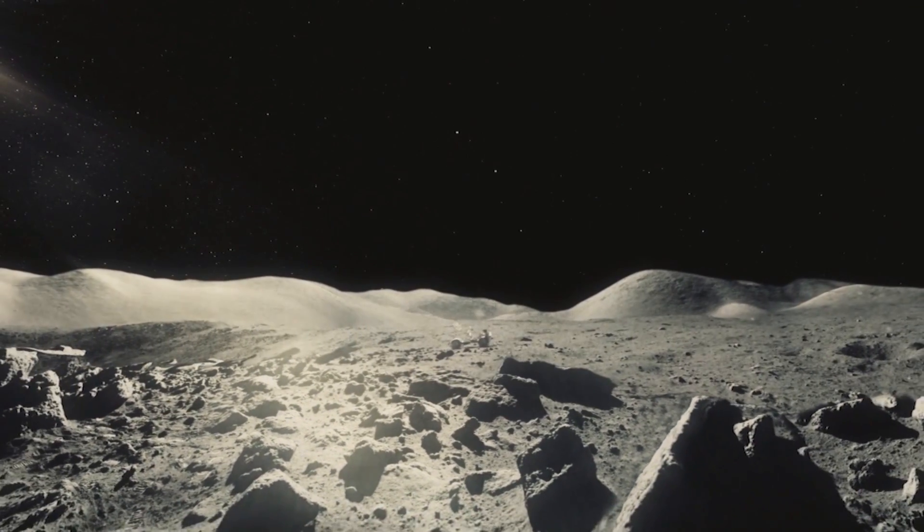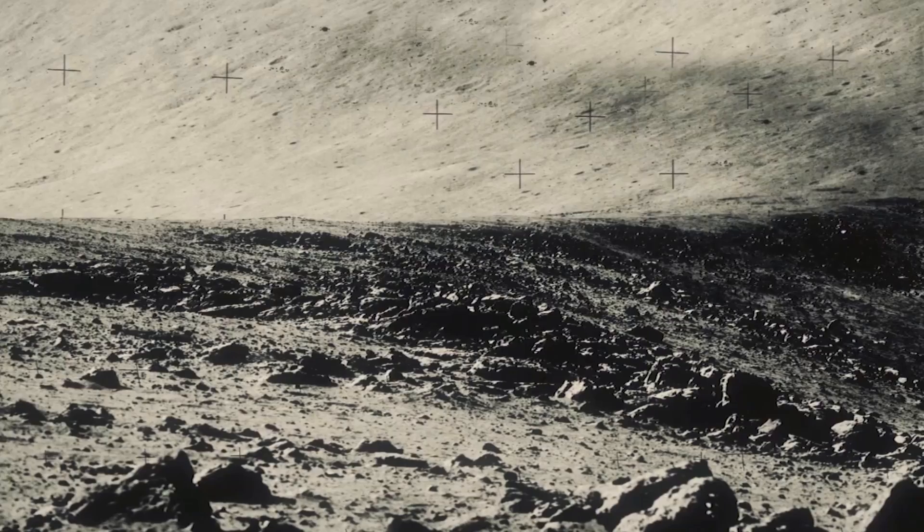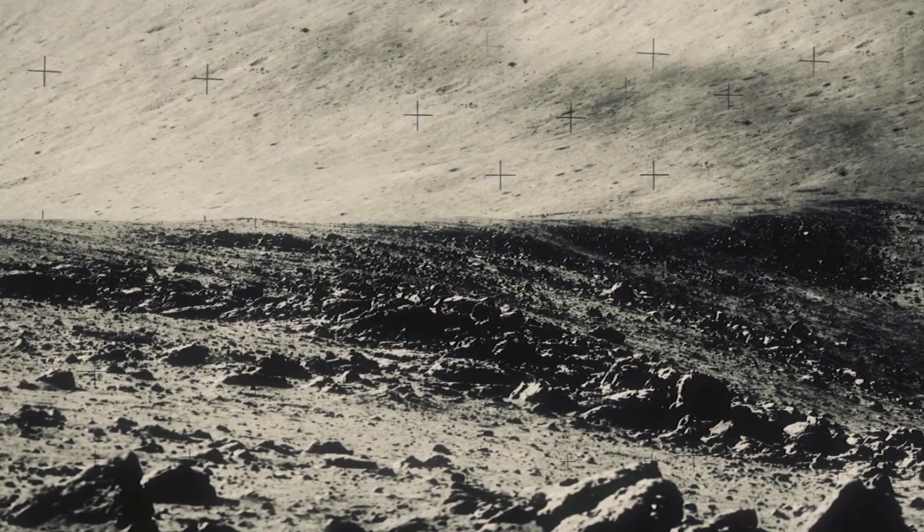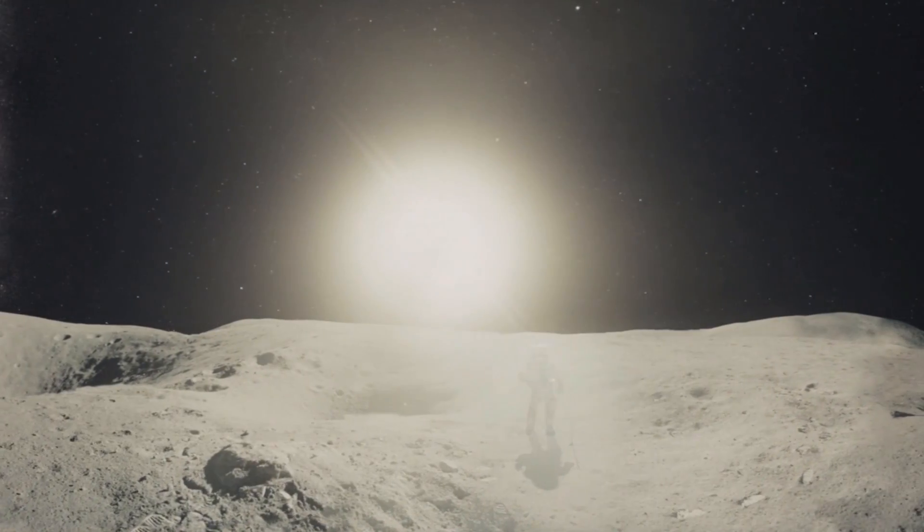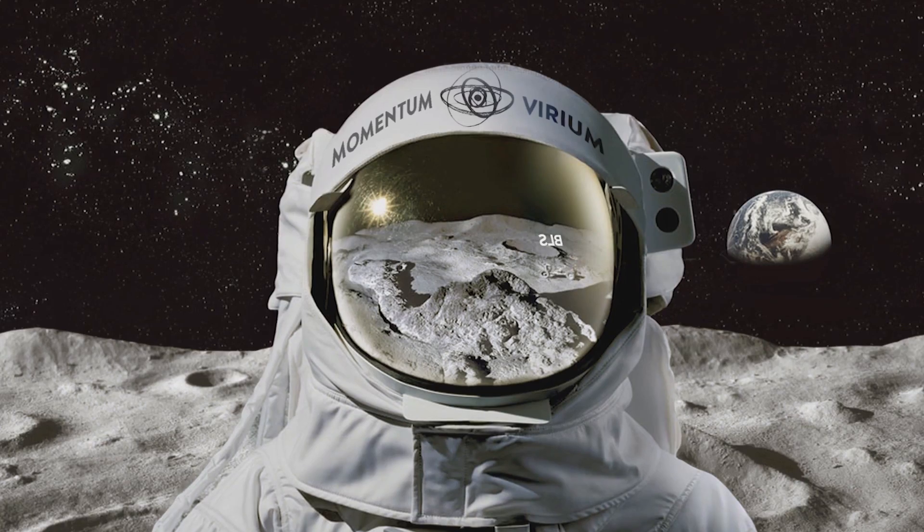The moon has remained completely untouched by humans since the 1970s. By not building directly on the lunar surface, the Momentum Virium encourages preservation and respect.